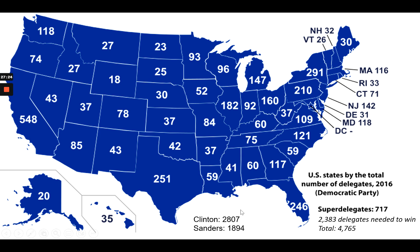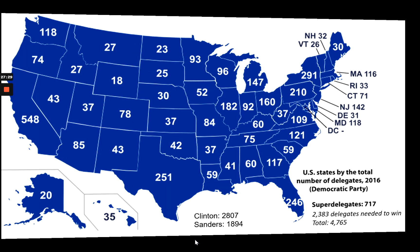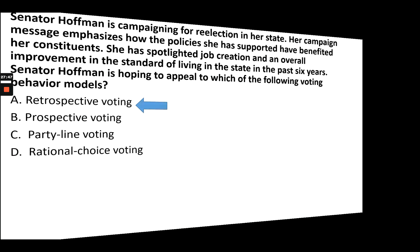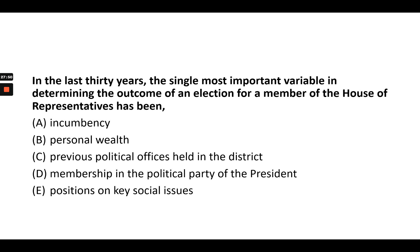Sanders did okay, but Clinton beat Sanders in the 2016 Democratic primary. Practice question answer: retrospective voting — because you're judging Hoffman based on the past. Another question: the answer is A, incumbency. Incumbents in the House win 90% of the time.